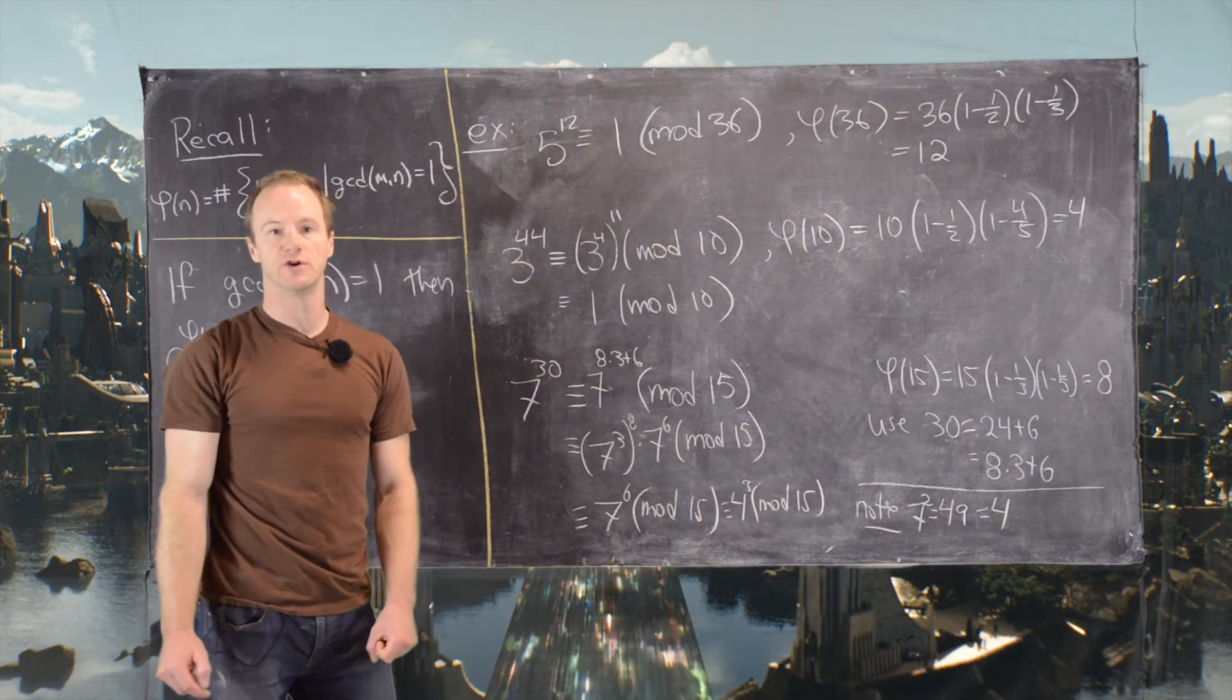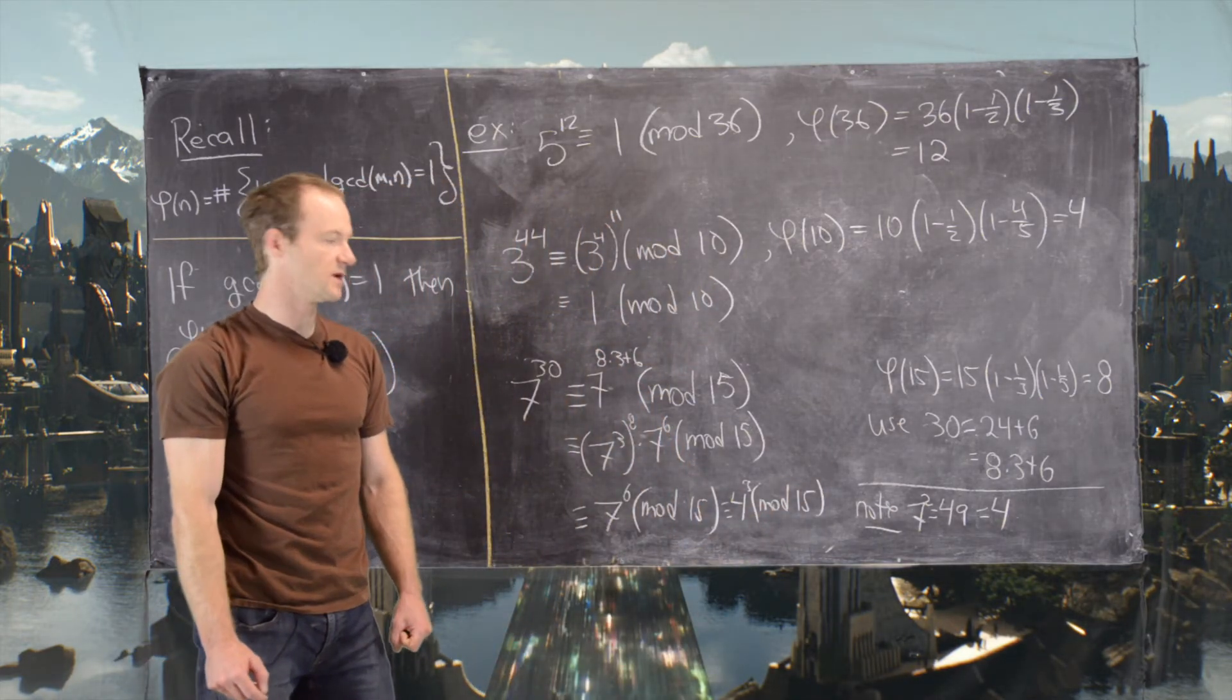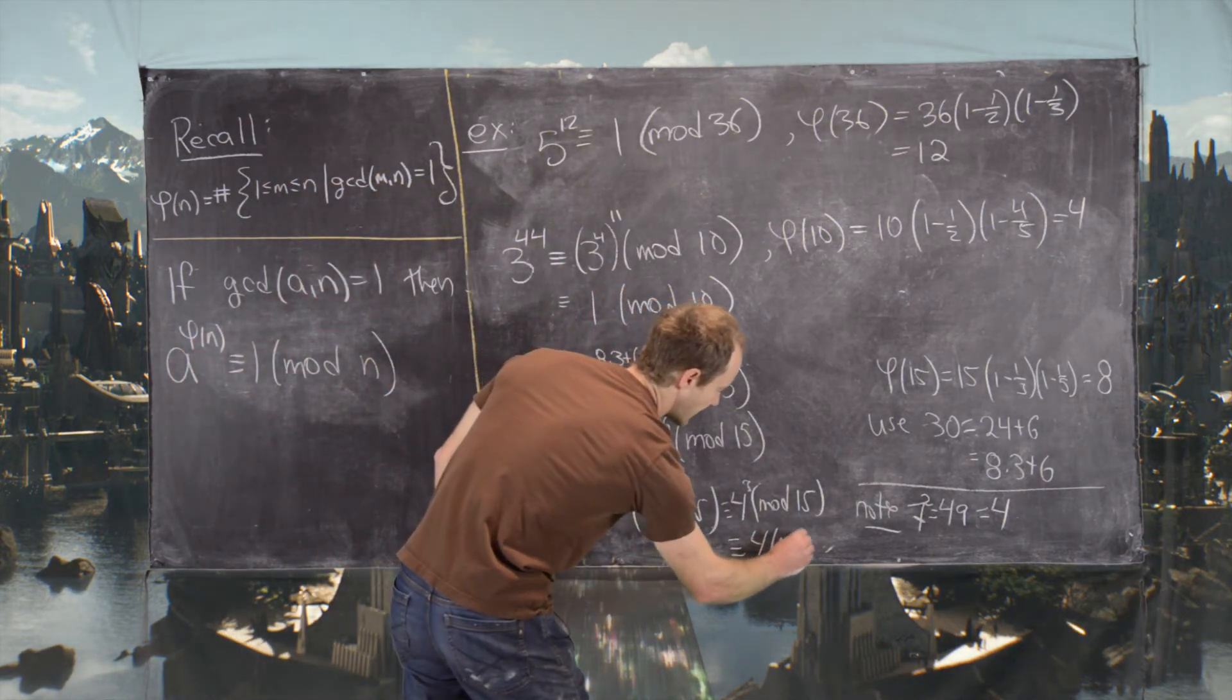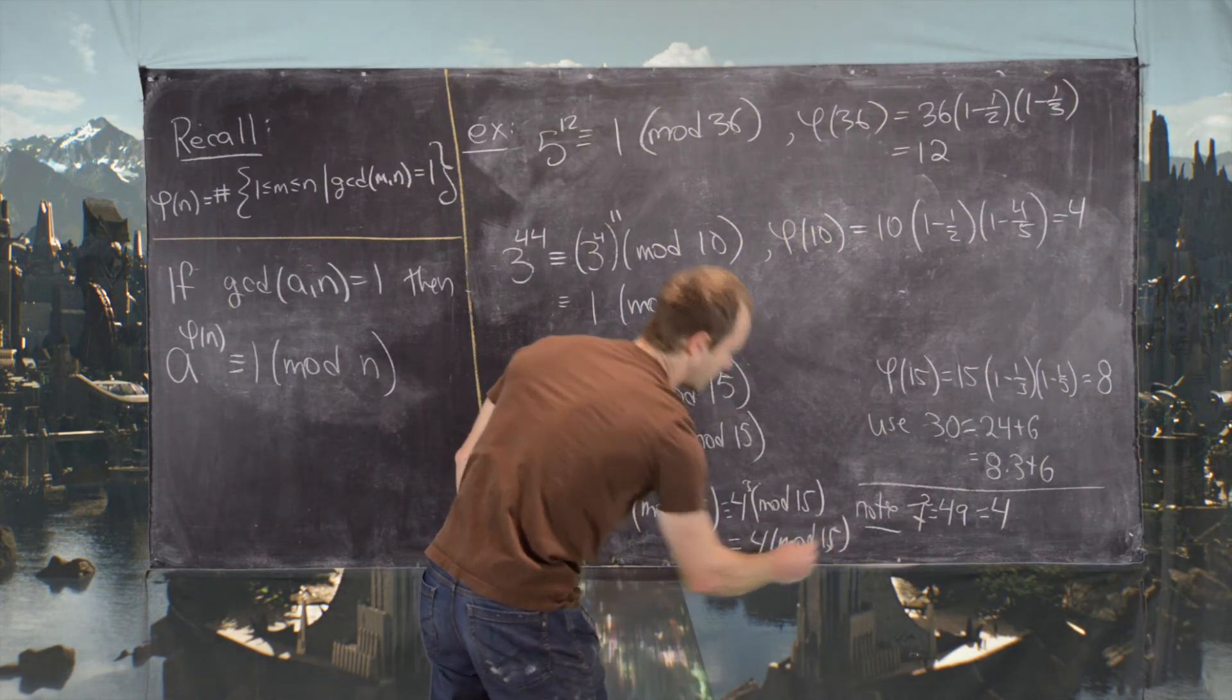But now 4 cubed is 64, and 64 is 4 mod 15. So the whole final answer is 4 mod 15.